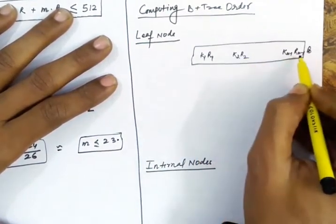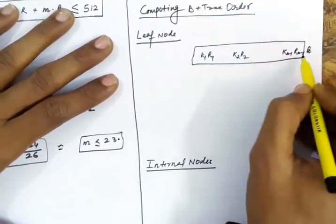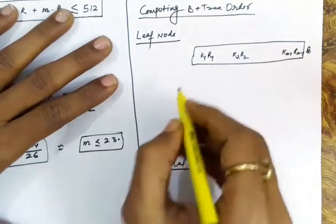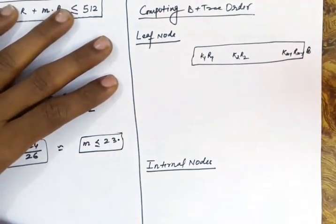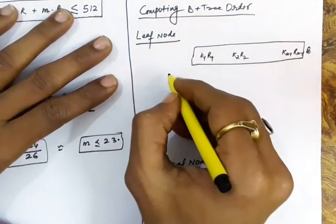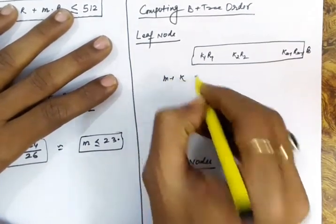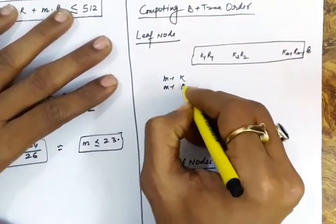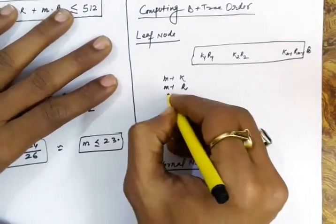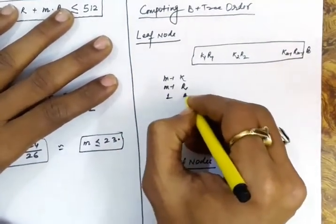So in a leaf node, we have the key value and record address pair, along with the address of the next node. But there will be no child node address, because in the leaf node there will be no children. So we have m-1 key values, m-1 record addresses, and only one block address.